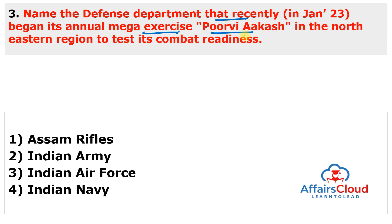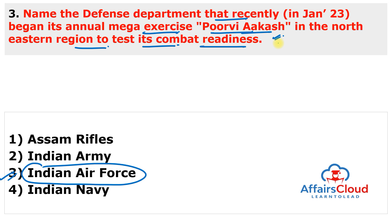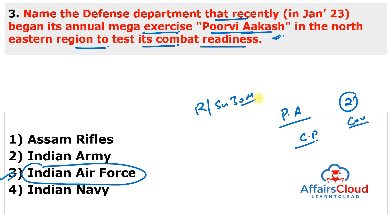Next question: Name the defense department that recently began its annual mega exercise known as Purvi Akash in the North Eastern region to test its combat readiness. The answer is the Indian Air Force. Purvi Akash, meaning 'North Eastern Sky,' is the IAF's annual mega exercise to check combat preparedness in the North Eastern region. This mega air drill was held after a gap of two years due to COVID-19. Frontline fighter jets including the Rafale and Sukhoi-30 MKI aircraft were deployed. The Shillong-headquartered Eastern Air Command conducted the exercise.